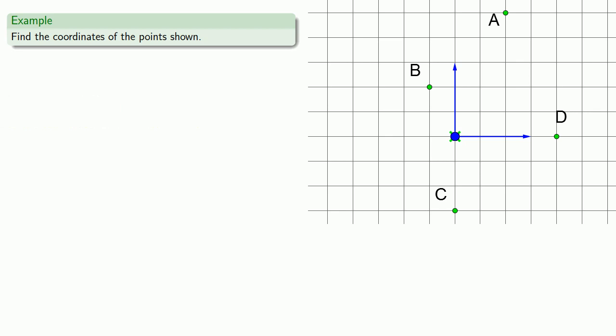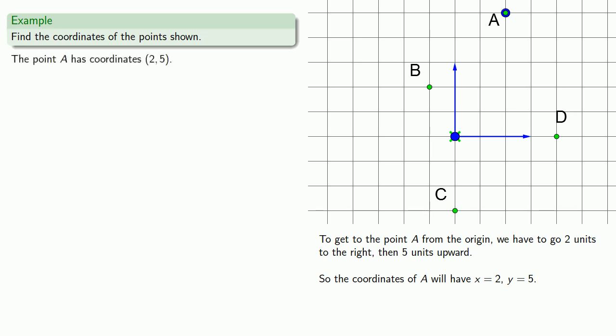So the coordinates represent the directions for getting to a point from the origin. So to get to the point A from the origin, we have to go 2 units to the right, then 5 units upward. Since we've only moved to the right and upward, our coordinates will both be positive, so the coordinates of A will have x equals 2, y equals 5, and we can write that down as the ordered pair (2, 5).